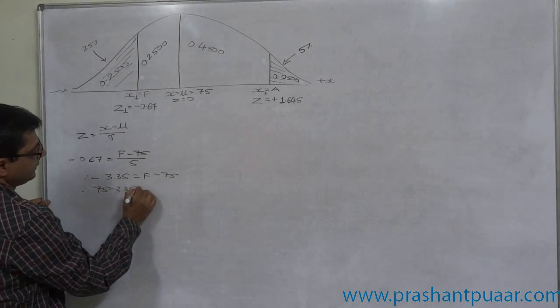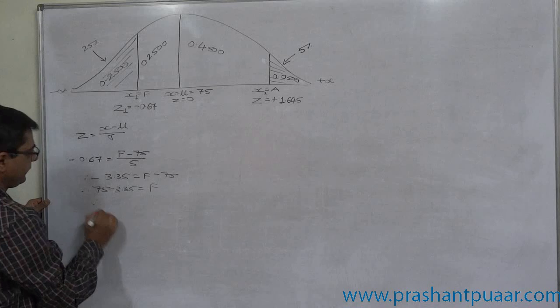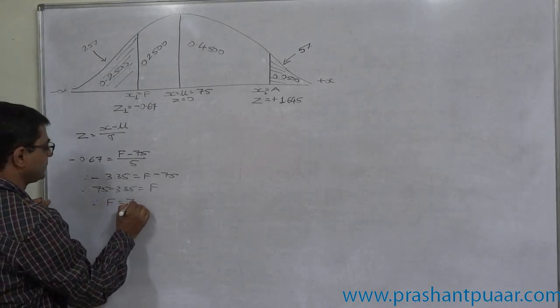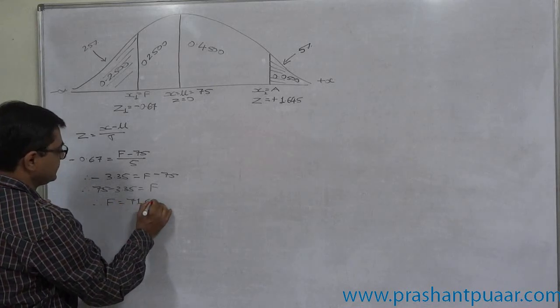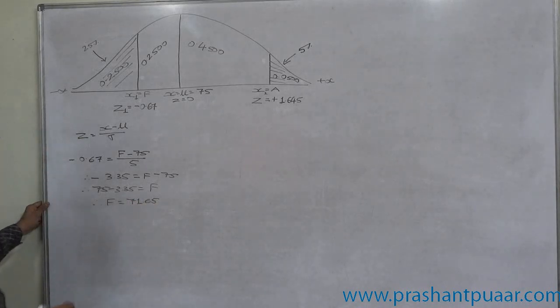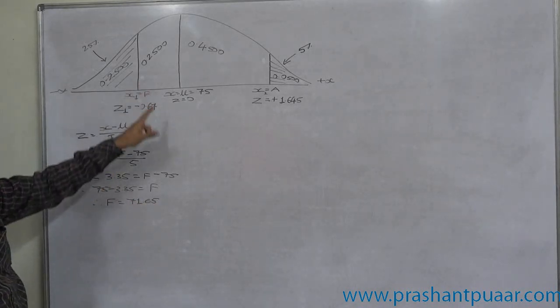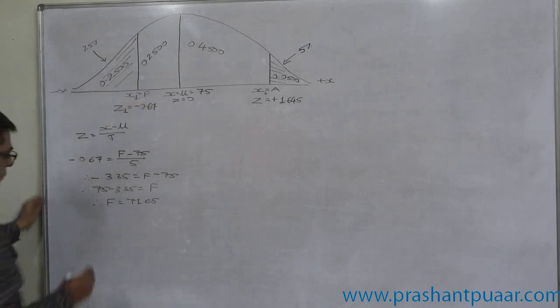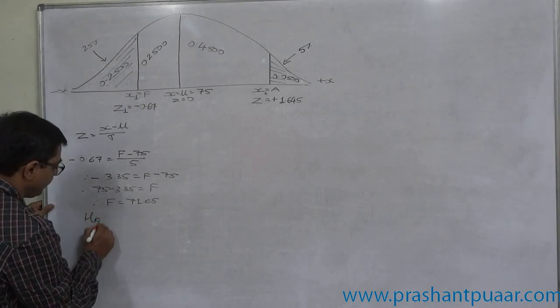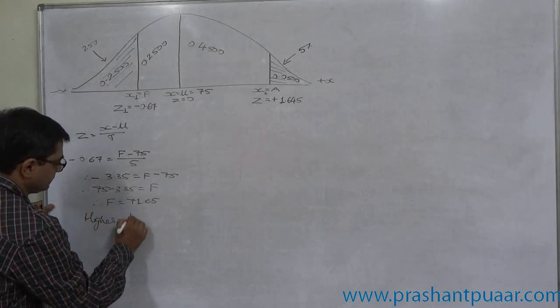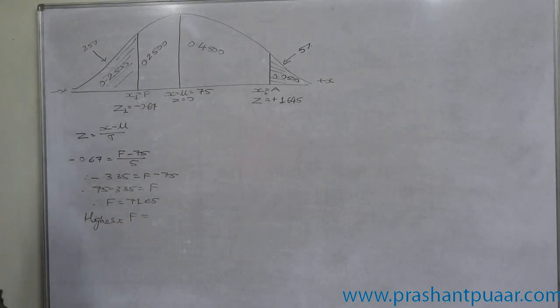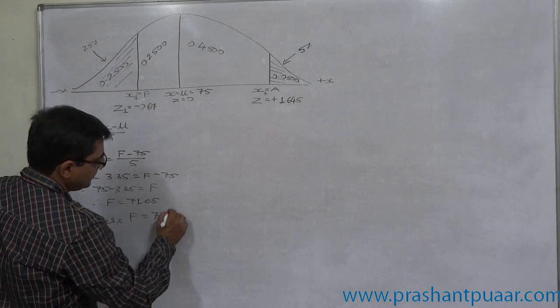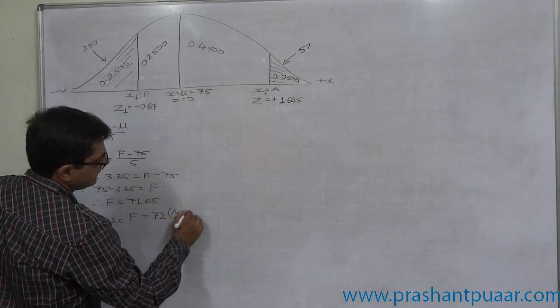It is the highest mark obtained by the student who is topper in the grade F group. So highest F, and marks are always in integers, so we can say that approximately 72 marks are highest F.